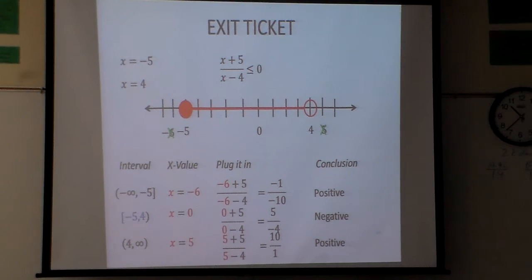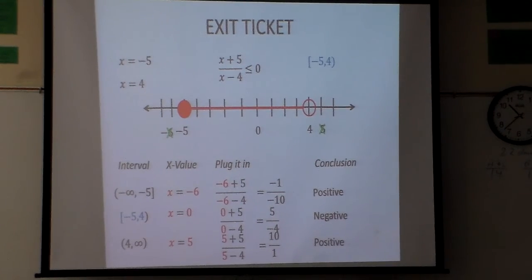So my only answer is right here. The answer is the values between negative 5 and 4, and it can equal negative 5. That's why it's a bracket on the negative 5 and a parenthesis on the 4. And this is my answer for this particular equation right here.